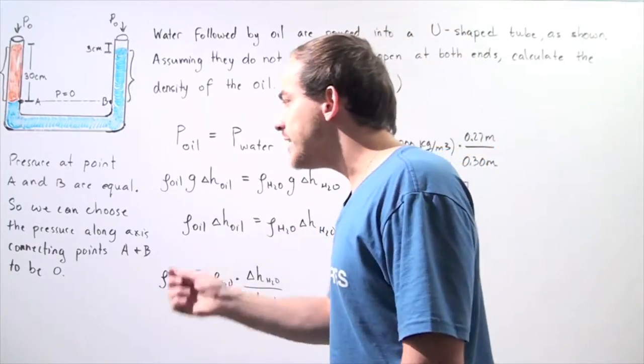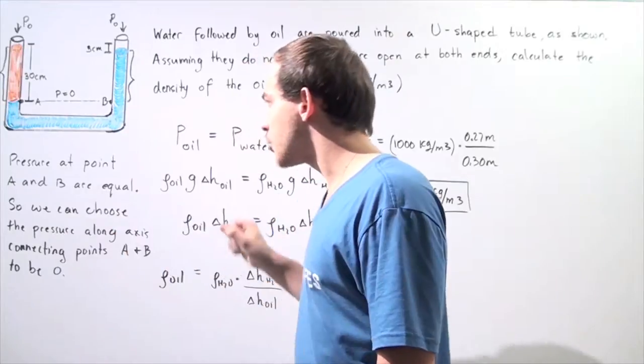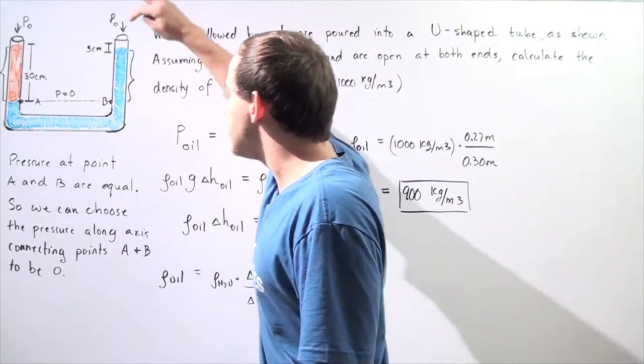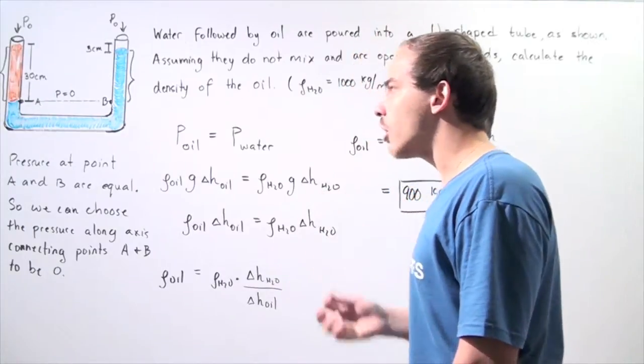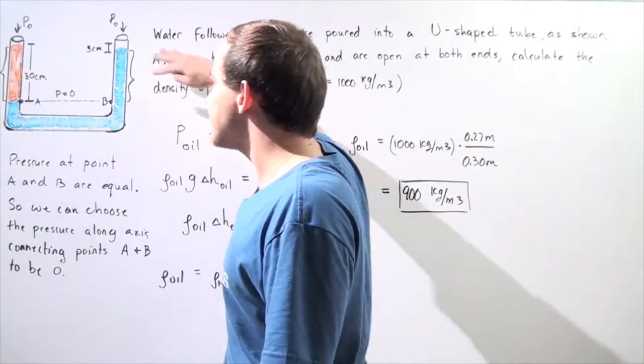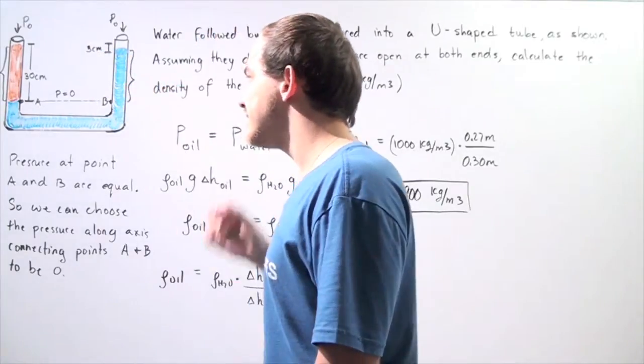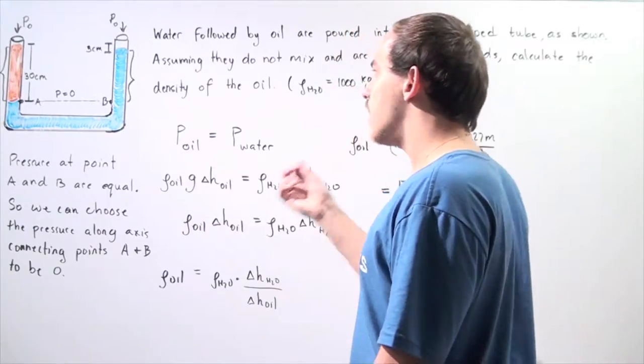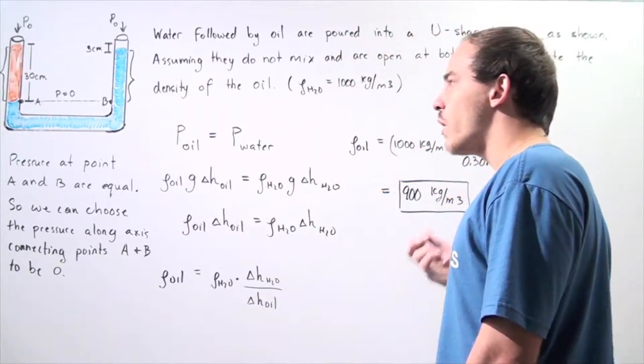So that means we can choose the pressure along this horizontal axis connecting point A and point B to be some arbitrary pressure. So let's choose the pressure along this axis to be equal to zero. That will allow us to calculate the density of the oil in a very simple way.